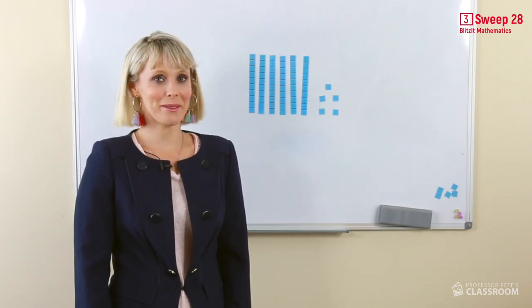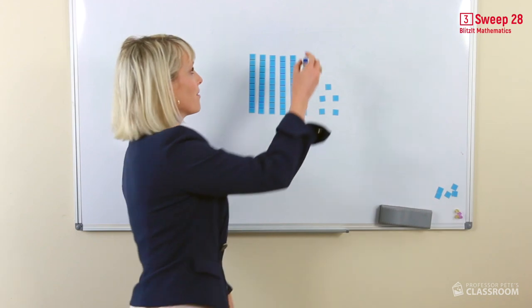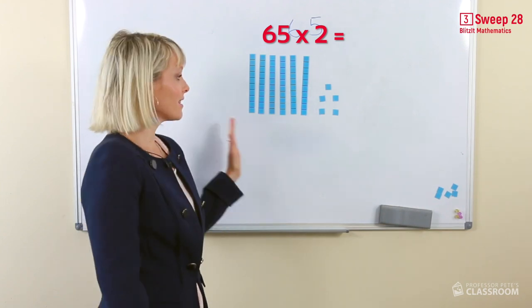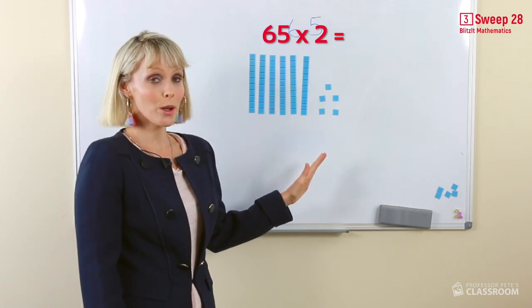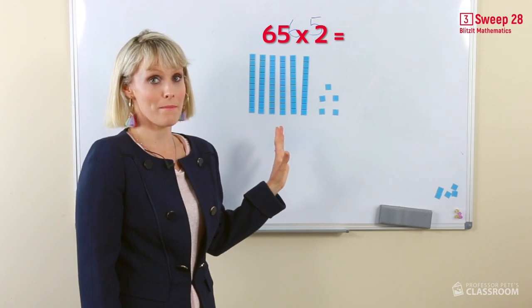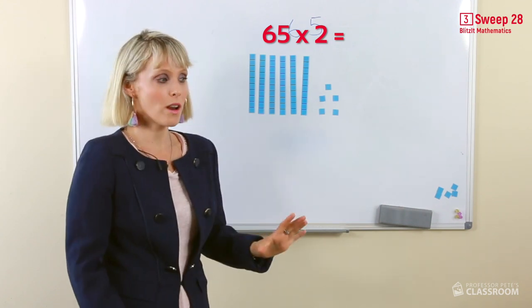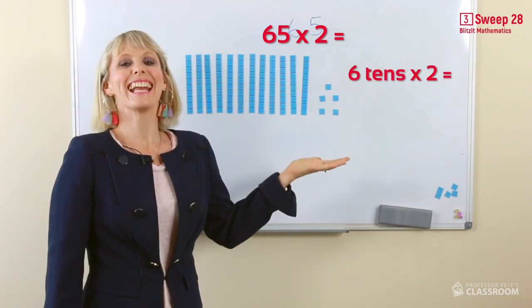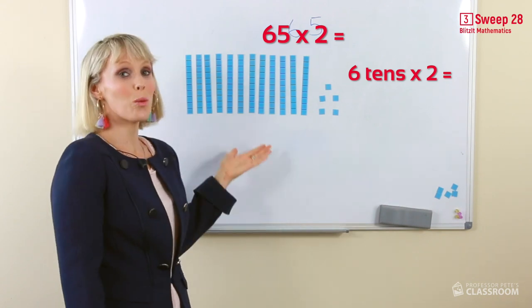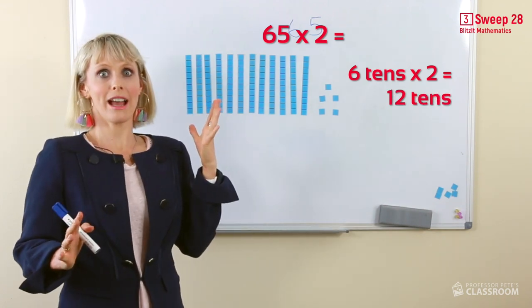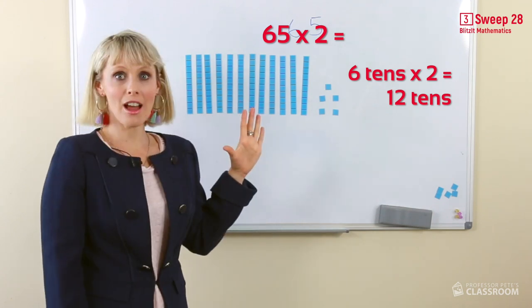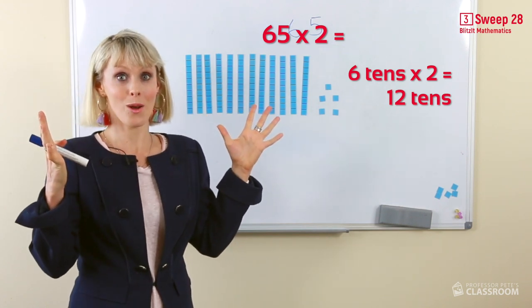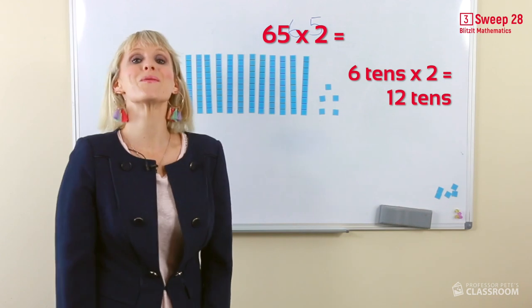Let's look at our next problem. Here we have 65. Now 65, we're going to work with the largest part of this whole number. Six tens. What is double six tens? Here it is. Twelve tens. We have the same problem. There are more than nine tens here. There's too many for me to just look at and know how many there are. What do we need to do? That's right. Regroup.